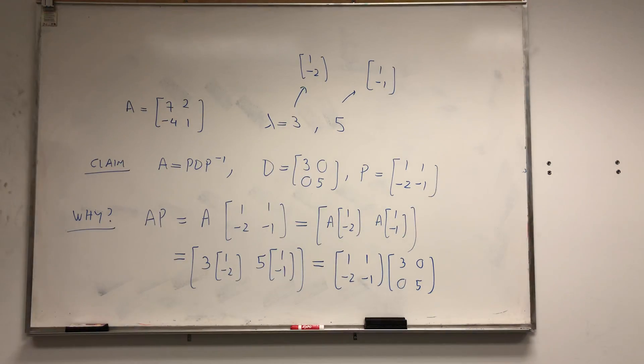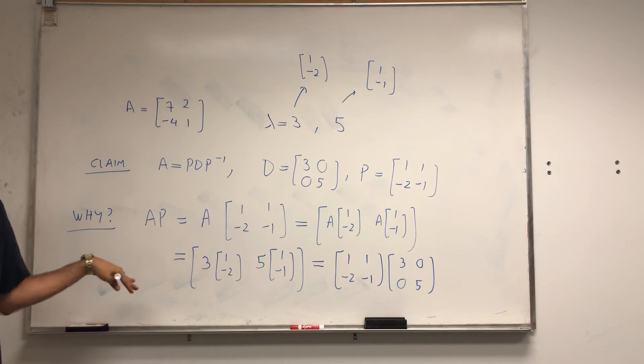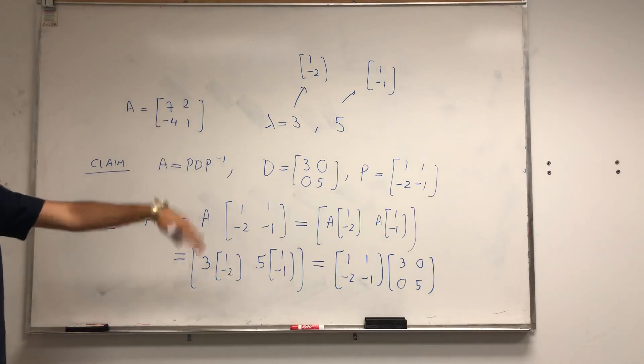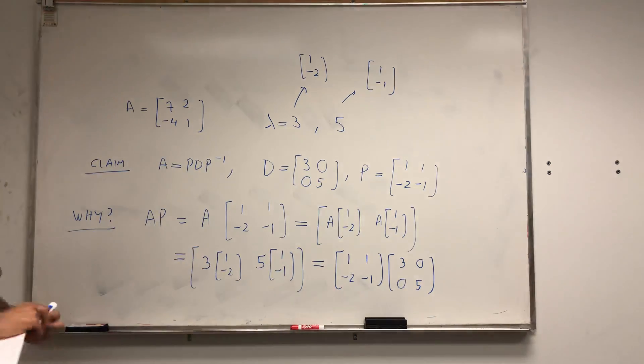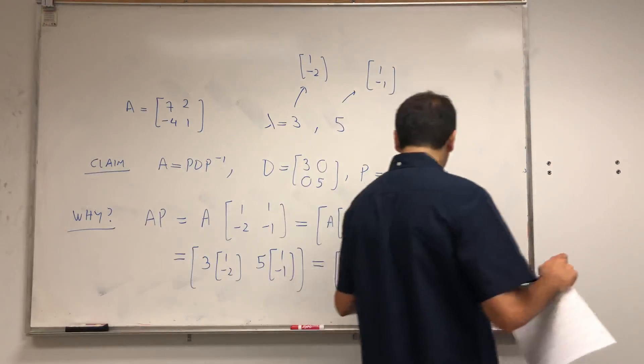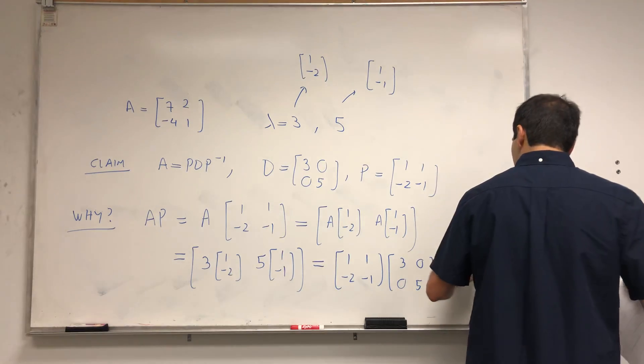You can check it algebraically. But the cool thing is, if you left multiply by a diagonal matrix, it multiplies the rows. If you right multiply, it multiplies the columns. And this is just the same thing as PD.